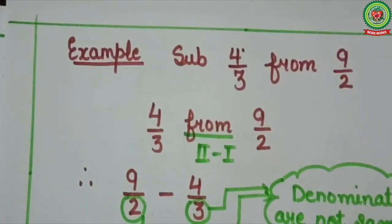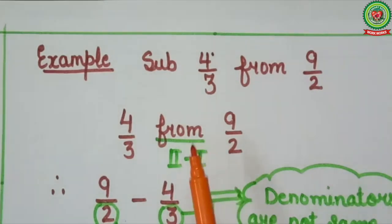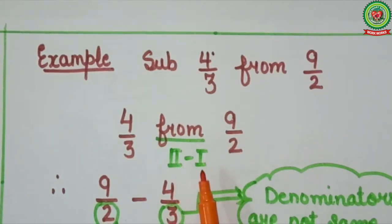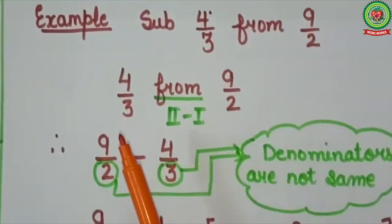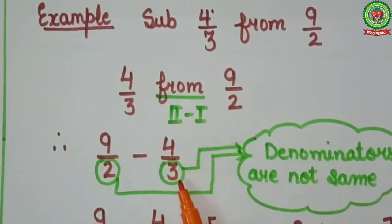Now let's take example 2. Here we have to subtract 4 upon 3 from 9 upon 2. Here 'from' means the second fraction is bigger. So we will write the second fraction minus the first fraction: 9 upon 2 minus 4 upon 3.